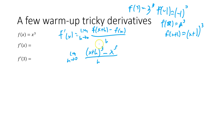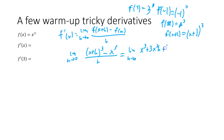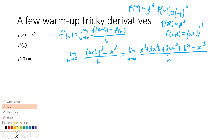We need to expand x plus h cubed. Using the binomial theorem with Pascal's triangle — 1, 3, 3, 1 — x plus h cubed expands to x³ + 3x²h + 3xh² + h³. So we have the limit as h approaches 0 of [x³ + 3x²h + 3xh² + h³ - x³] / h. The x cubed terms cancel out.